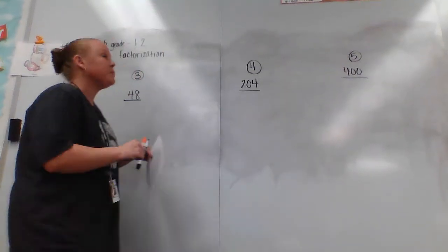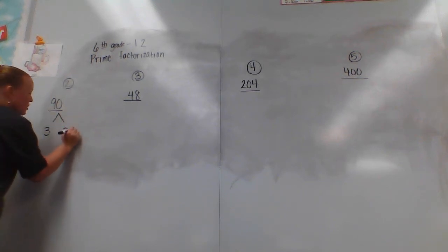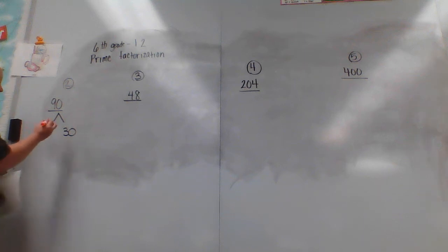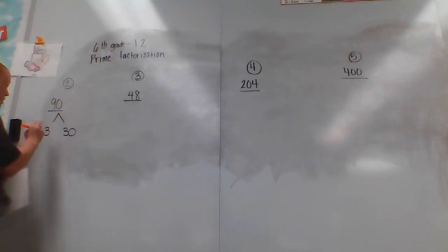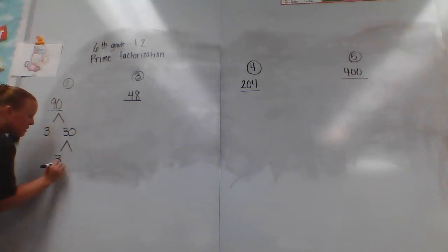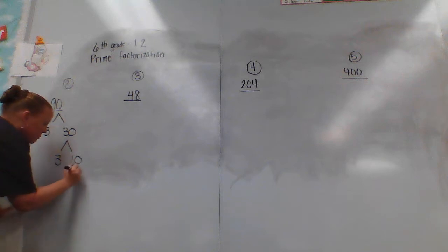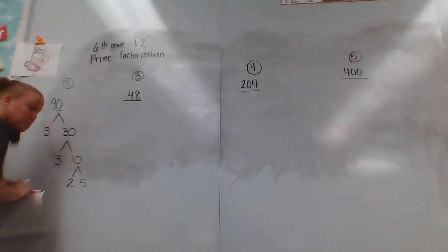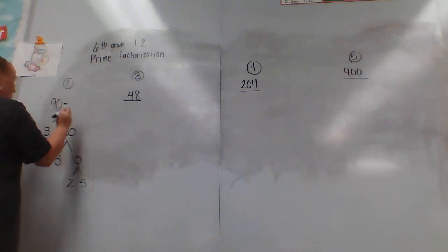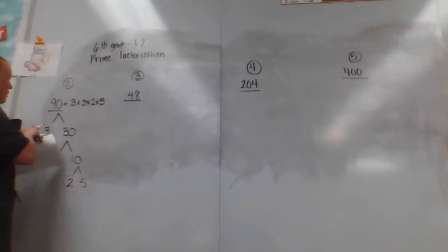We're going to go ahead and do number 2: 90. I know that 3 times 30 is 90 — you can also do 2 times 45, any number that'll get you to 90. 3 is a prime number, so I'm going to circle that. How do I get 30? I'm going to do 3 times 10 — circle that 3 because it's prime. 10 is 2 times 5, both prime numbers, circle them. So up here we write 3 times 3 times 2 times 5, and that is our answer.